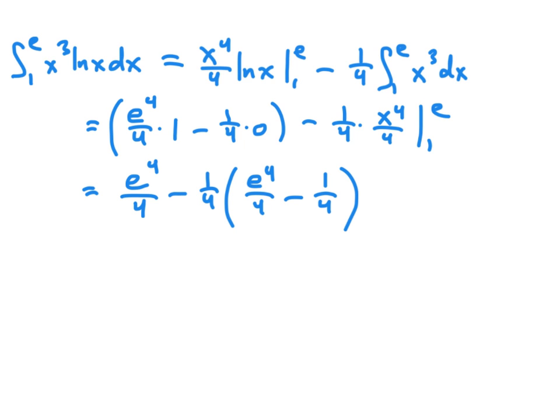We could certainly keep the expression in this form, since this is just a number, even though it's written in a complicated fashion. Or if we wanted to clean it up a little bit, we could rewrite this as e to the 4th over 4, minus e to the 4 over 16, plus 1 16th. We could certainly find a common denominator if we wanted and simplify it a bit more. But at this point, we can see that the numerical value of what this integral will represent. And so this is a fine answer for this particular definite integral.